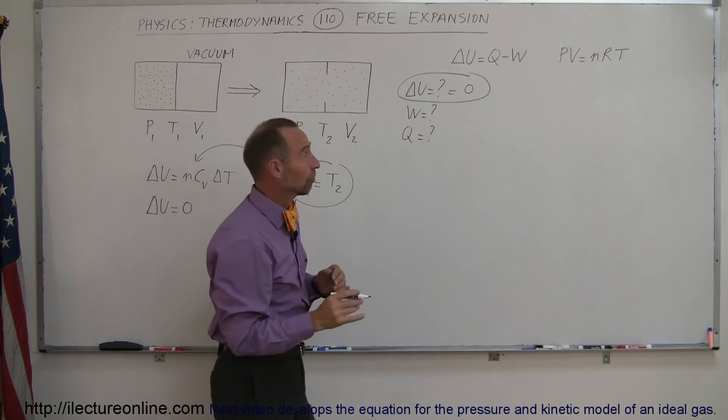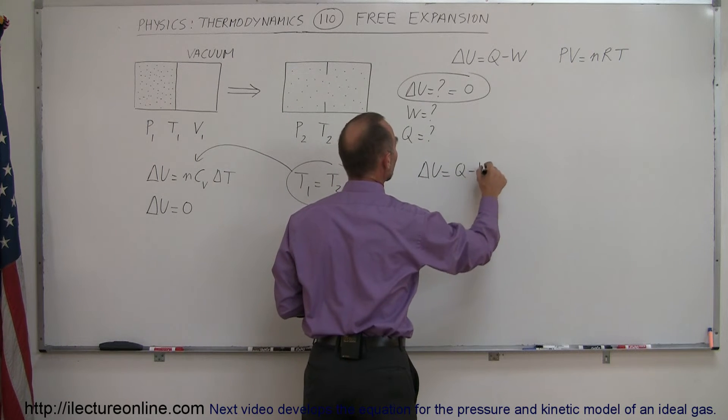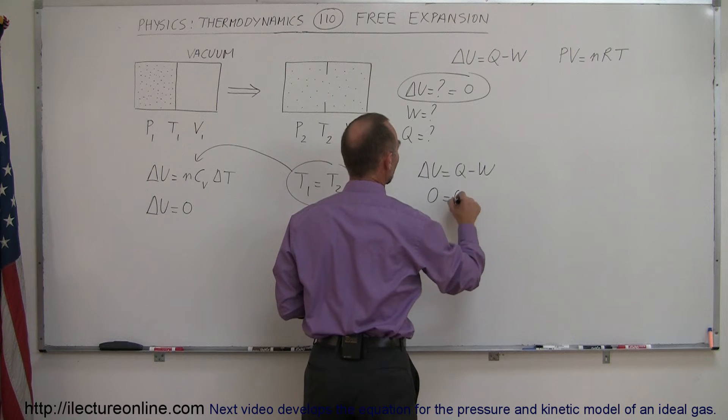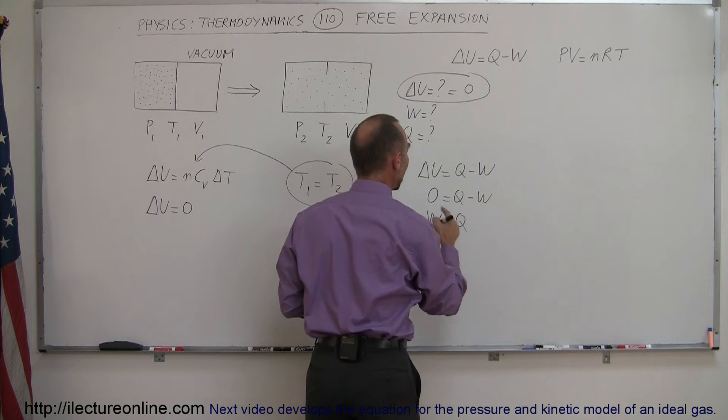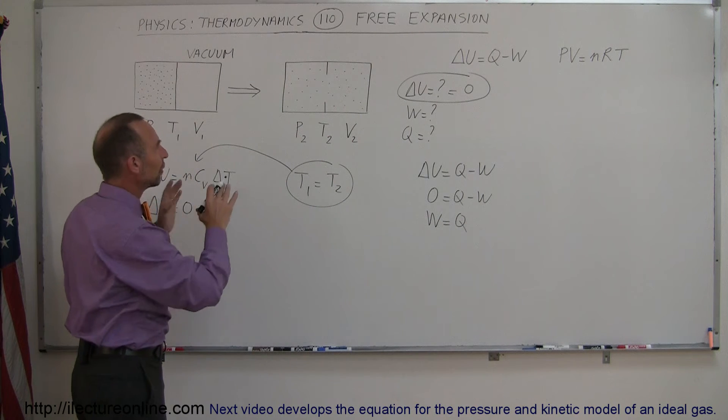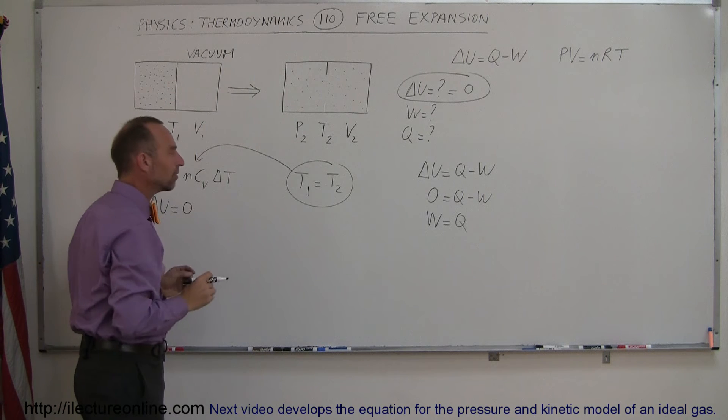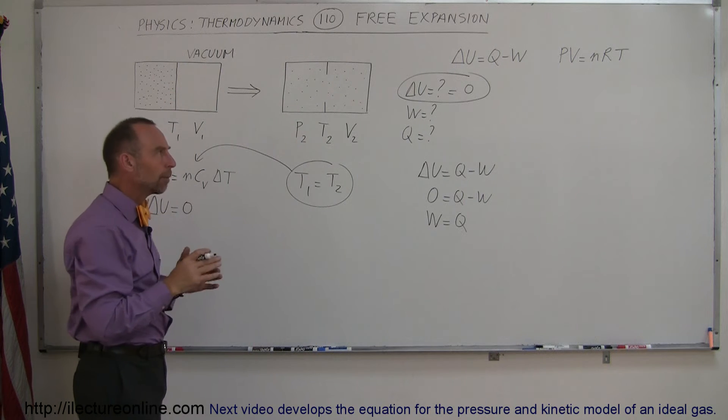Now when we use the first law of thermodynamics that says that delta U is equal to Q minus W, and therefore 0 is equal to Q minus W, that means the work done is equal to the heat added to the gas. But we just said that we have insulated this very well. That means that no heat can be added to the gas. That means Q is probably 0.